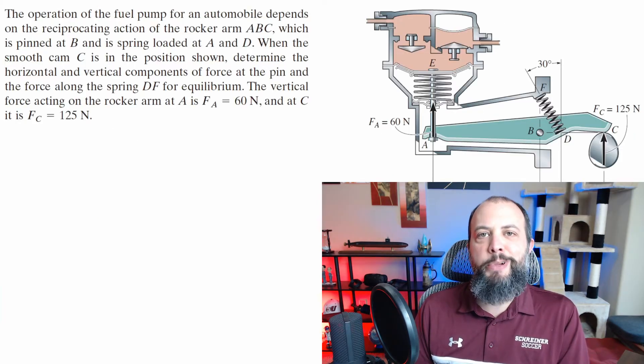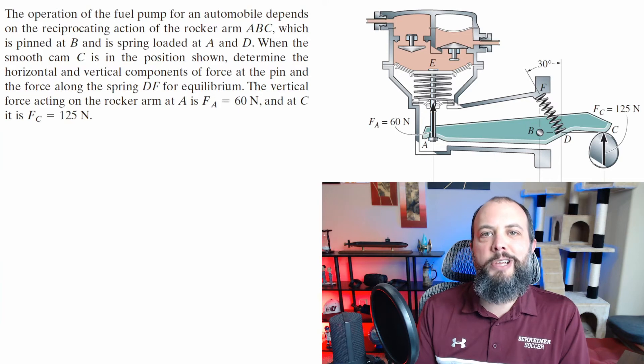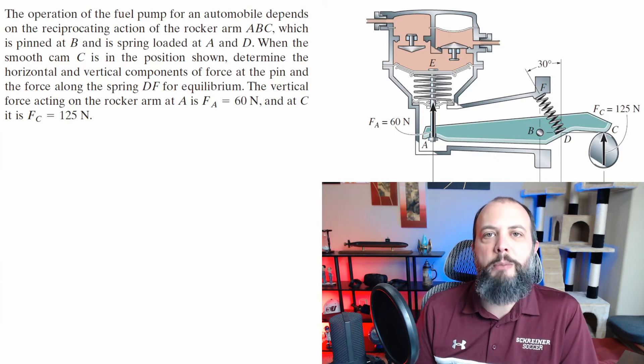Again, another very complex looking machine. But as you create your free body and remove all of the connections, you'll see that that teal colored piece of metal is essentially just a horizontal beam, like some of the simpler problems we've already done.